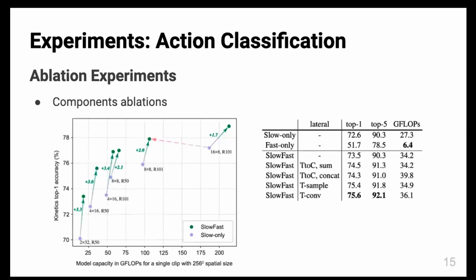They did some ablation experiments. For the left figure, we can see that the purple points are when the authors used the slow pathway only. The green is when they used the fast pathway together with the slow pathway. We can see there is a general trend in which the fast pathway helps the overall system to perform better.